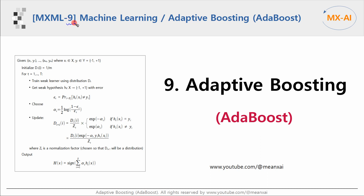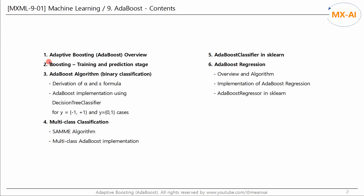This is part 1 of a series on the Adaboost algorithm, called Adaptive Boosting, which is the 9th module of machine learning. Let's take a look at the full table of contents of Adaboost. Chapter 1 and Chapter 2 provide an overview of Adaboost. In Chapter 3, we will look at the Adaboost algorithm for binary classification.